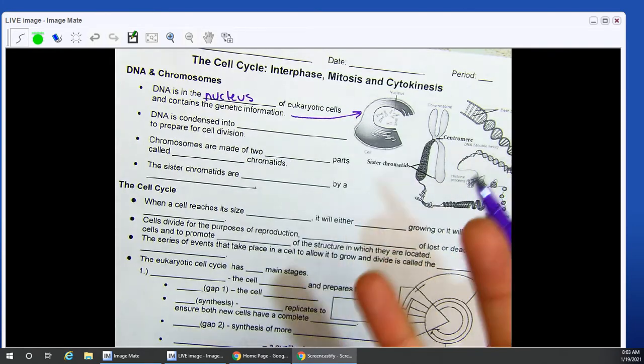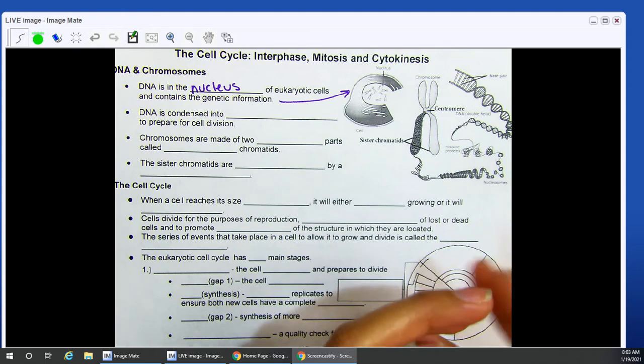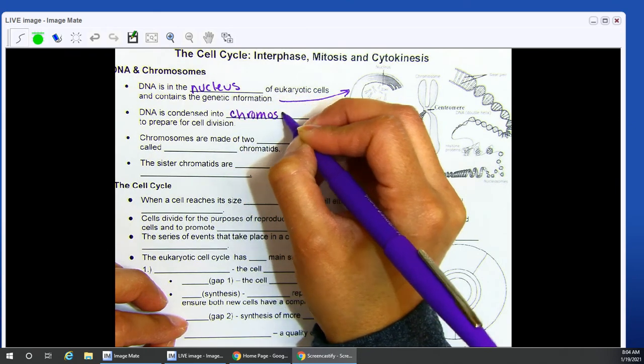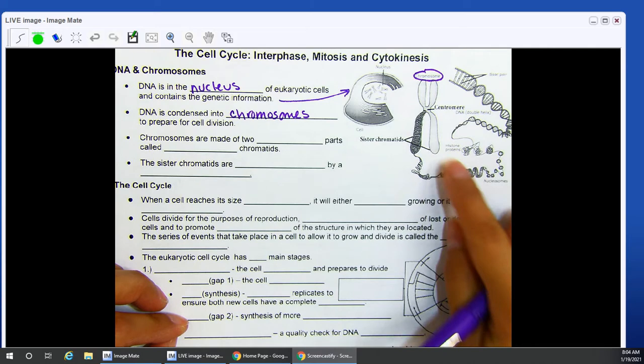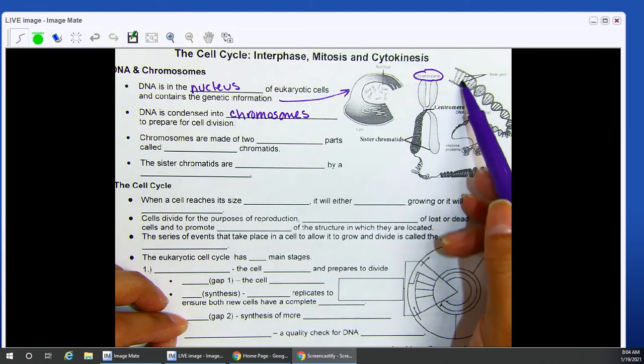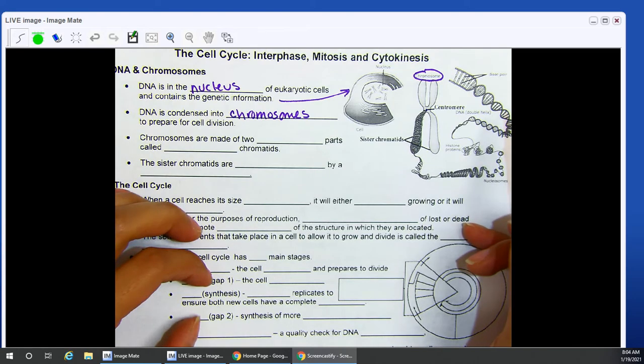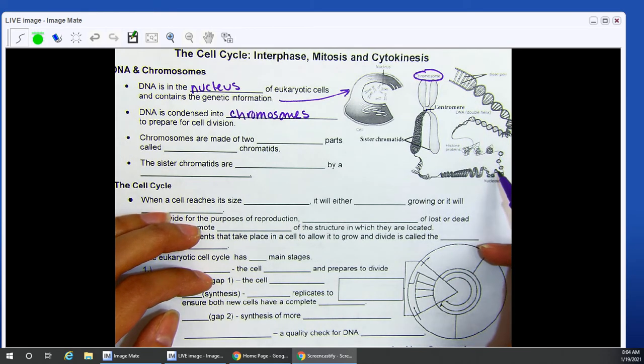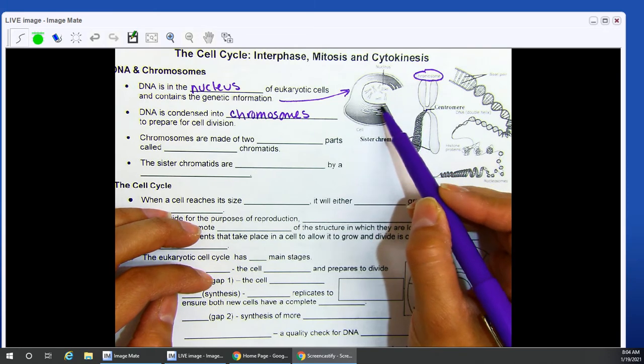DNA is condensed. The word condensed means to kind of squish and bring together. So instead of it taking up a lot of room, you can condense it down into a smaller space. DNA is condensed into chromosomes to prepare for cell division. This is a chromosome here on the right. It has this characteristic X shape, and they are bound together here in the center by a centromere.